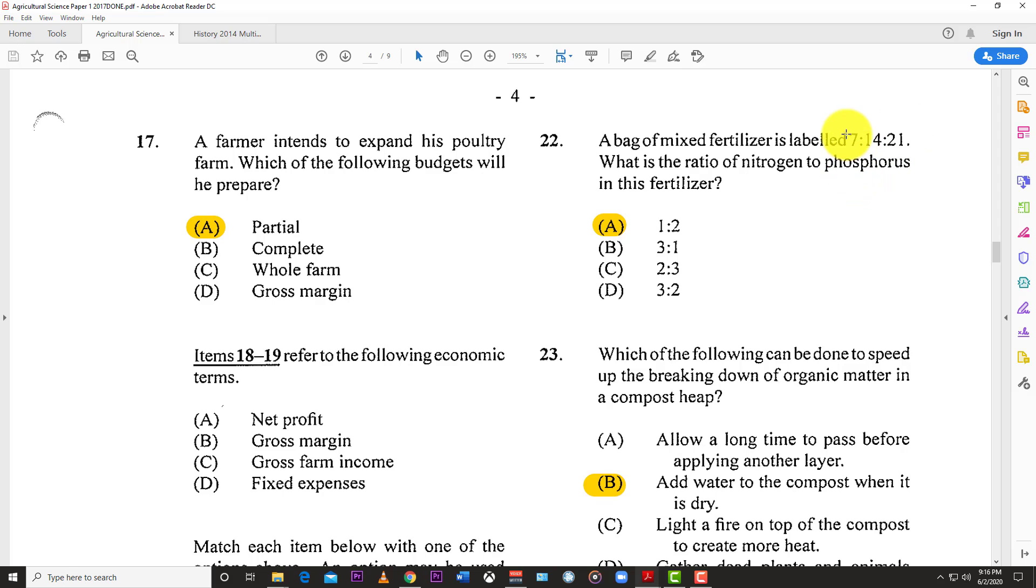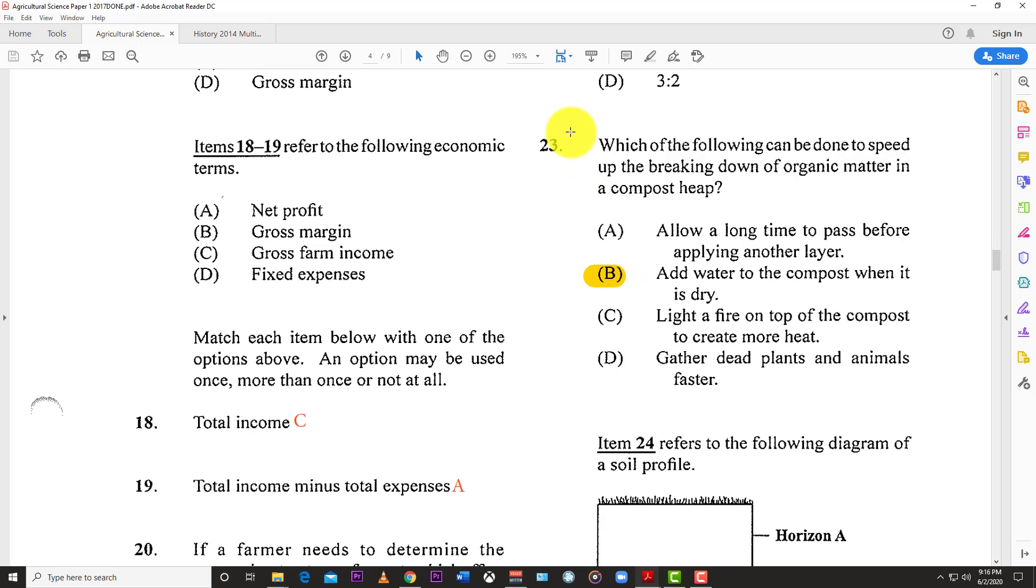N-P-K represents nitrogen, phosphorus, potassium. The first number represents nitrogen, second phosphorus, and last potassium. Therefore, 7 to 14 is the same as 1 to 2, so the answer is A, one to two ratio.